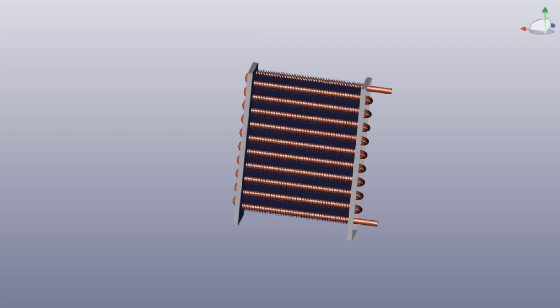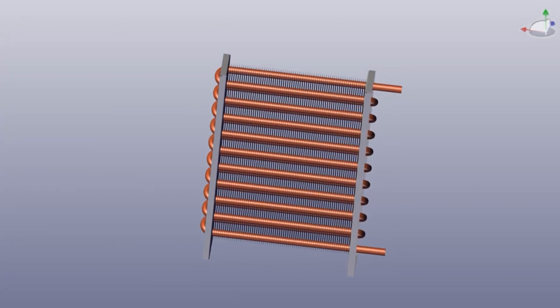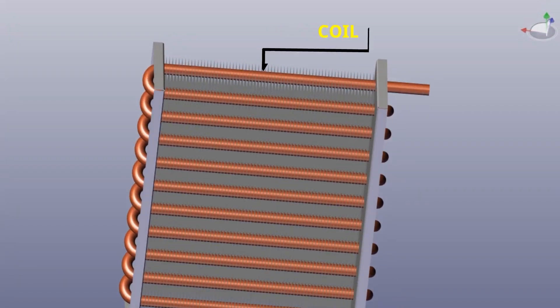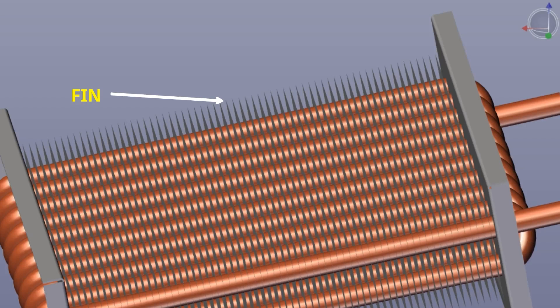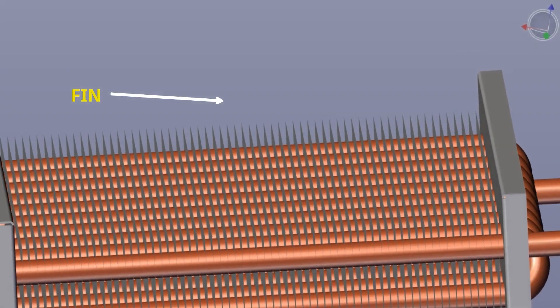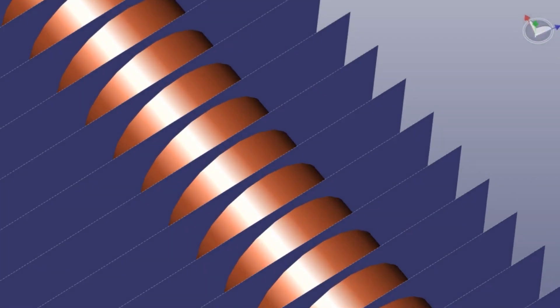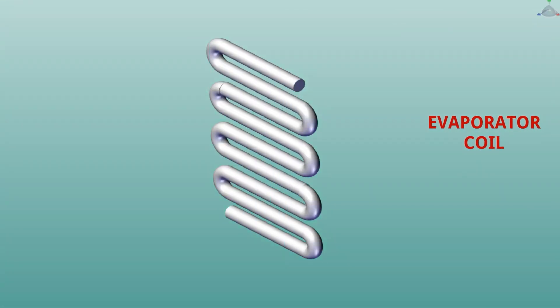Let's see the evaporator at a glance. It is basically a cooling coil made of copper, shaped as a coil to increase the surface area so that more heat transfer can happen. Fins are provided to further increase the surface area. Normally the fins are made of copper, and sometimes aluminum fins are used as well.